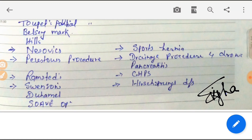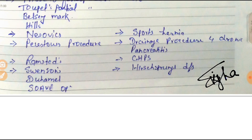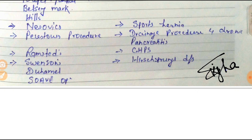For Hirschsprung disease, Swenson's, Duhamel's, and Soave's operations are used. Hirschsprung disease is a congenital developmental neurological abnormality — meaning the nervous system in the GIT is not developed. Obstruction occurs in the large intestine, at the medial two-thirds of the transverse colon or rectum, due to the nerves not growing according to developmental age.